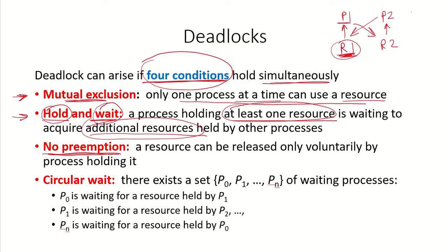The third condition is no preemption: a process waiting for a resource cannot forcibly take that resource from the process holding it. If p2 is waiting for r1, p2 cannot preempt p1 and take r1 away; similarly p1 cannot preempt p2 to take r2. The resource r1 must be released voluntarily by p1, and r2 must be released voluntarily by p2. Only after a process finishes using and voluntarily releases a resource can another process use it.